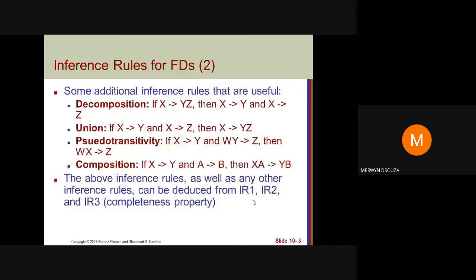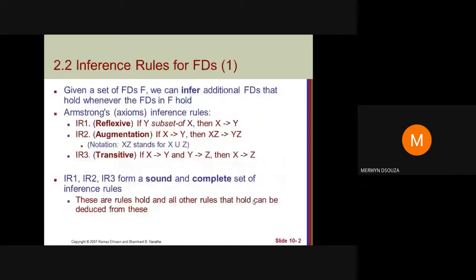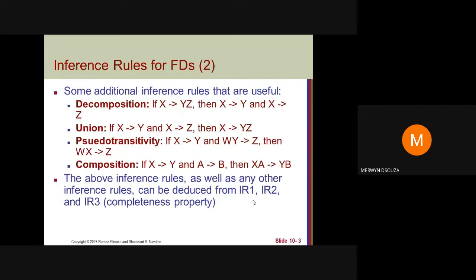Students, you need to study these inference rules and write them down properly in order to do normalization. At least the first three inference rules you must know by heart. You should be able to understand: what is the reflexive rule, what is transitive, what is augmentation, what is decomposition, what is union. Please study these rules properly. Thank you for listening.